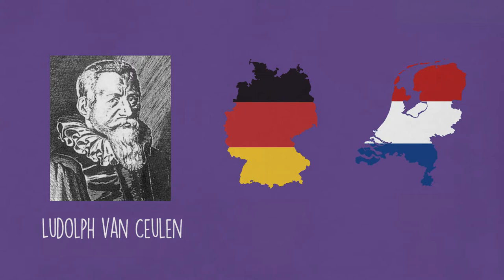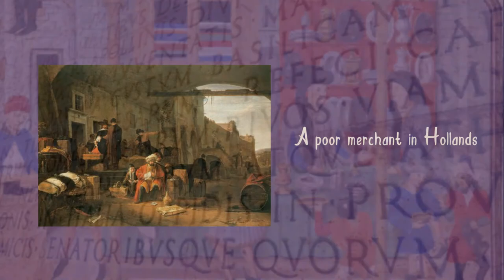He was born in 1540 in Germany, but spent most of his life living in the Netherlands. He was the son of a merchant and was too poor to go to university.